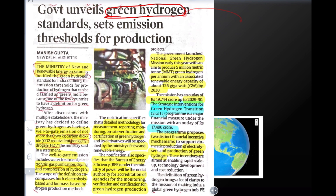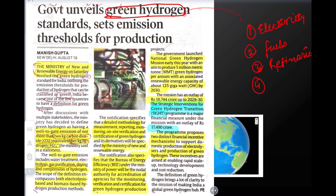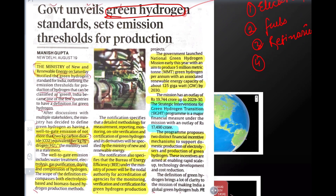Green Hydrogen can be used for two main things: first, it is used to make electricity; secondly, it can be used in fuels; third, refineries. And fourth, because hydrogen is the smallest element of the periodic table, it has a lot of lifting power.